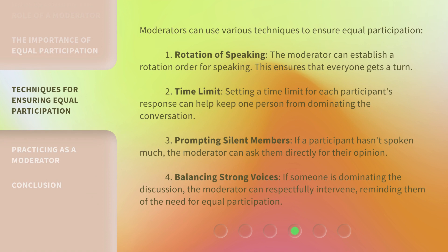Moderators can use various techniques to ensure equal participation. First, Rotation of Speaking: the moderator can establish a rotation order for speaking, ensuring that everyone gets a turn. Second, Time Limit: setting a time limit for each participant's response can help keep one person from dominating the conversation. Third, Prompting Silent Members: if a participant hasn't spoken much, the moderator can ask them directly for their opinion.